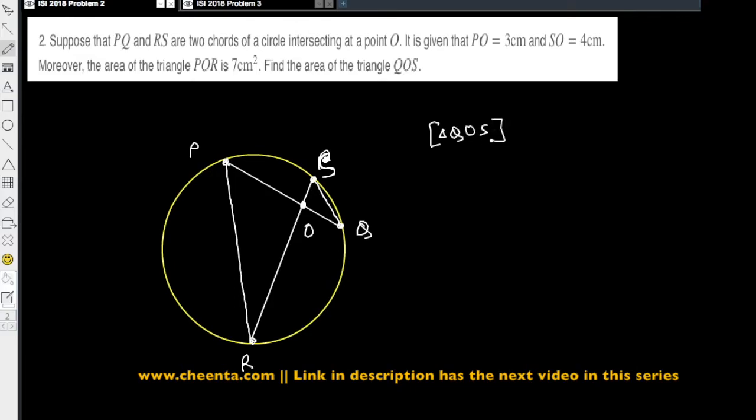This is what we want to find out. The given information: the length of PO is 3 centimeters, so this is 3. SO is 4 centimeters, so this is 4.